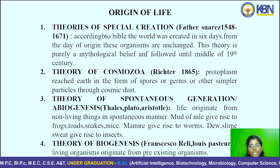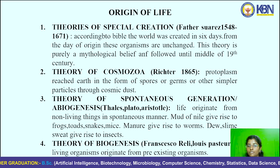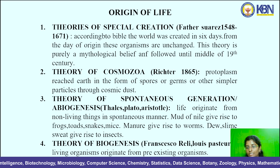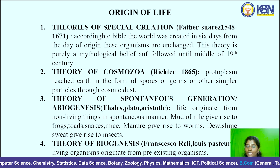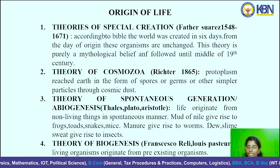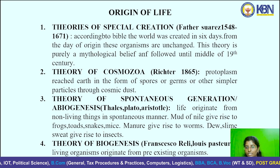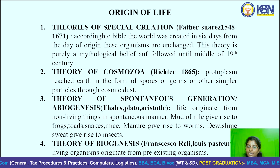The next theory is the Theory of Spontaneous Generation or Abiogenesis. This theory says that life originated from non-living things — for example, frogs, toads, and snakes arise from mud; worms arise from manure; and insects arise from juice, slime, and sweat. All living organisms are said to arise from non-living things.